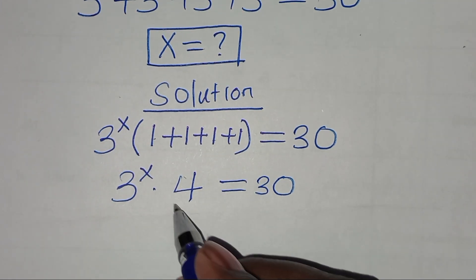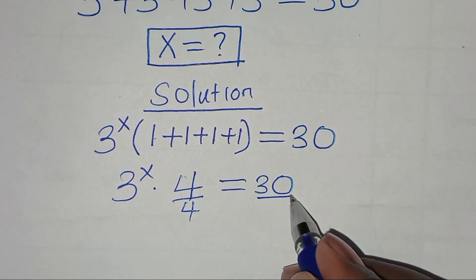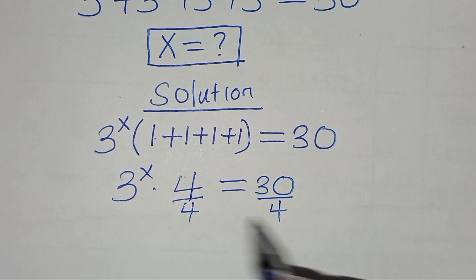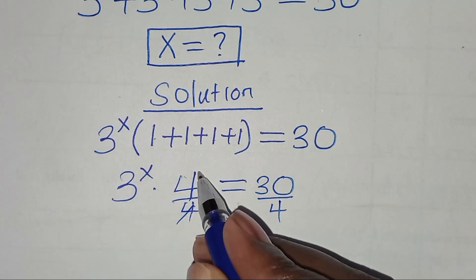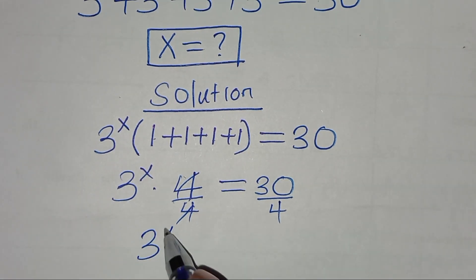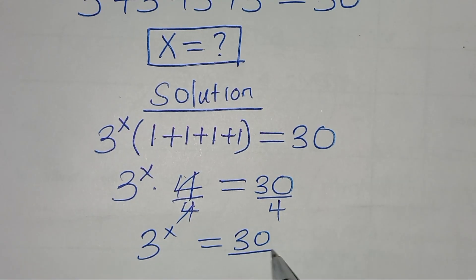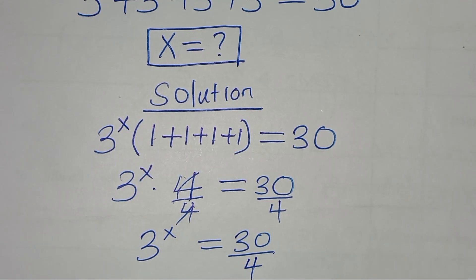So let's divide both sides by 4, so that 3 to the power x is equal to 30 over 4.